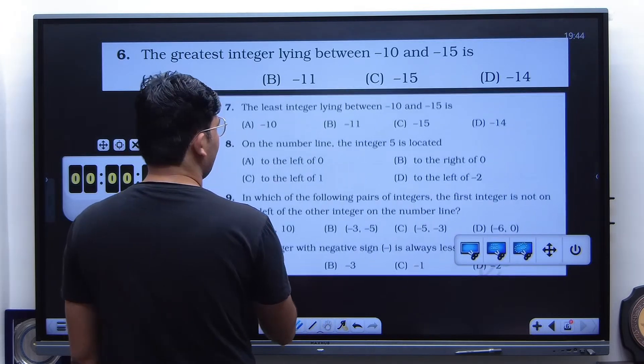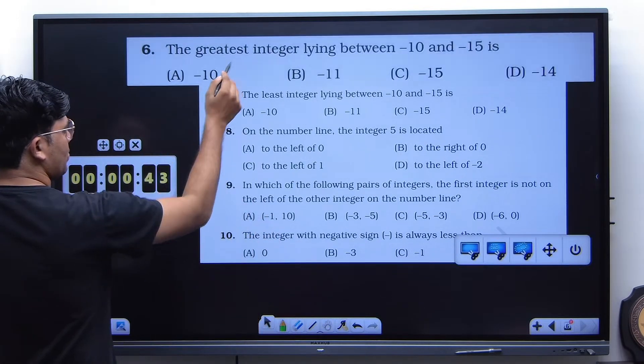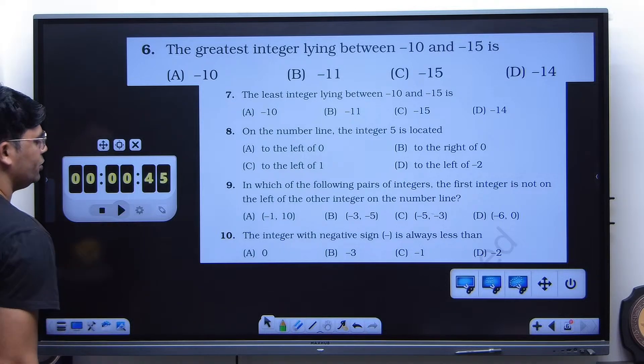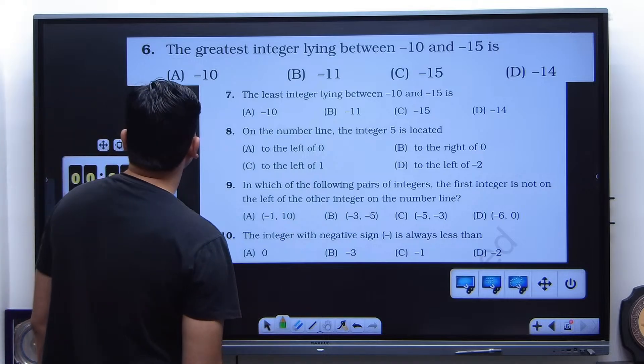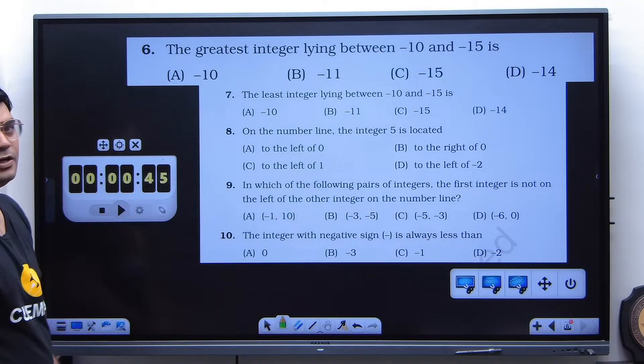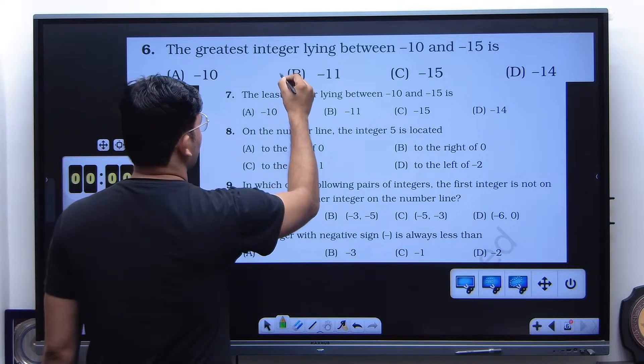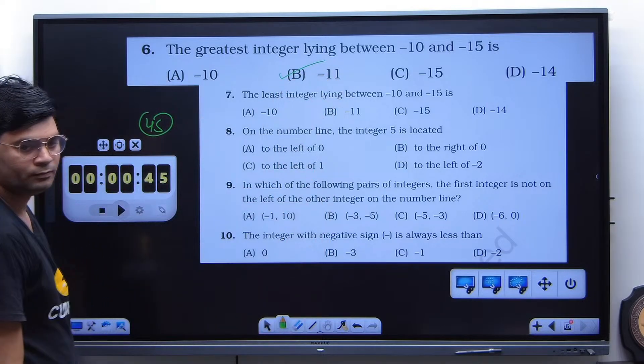All the questions are readable. Yes. Time starts now. Okay, third one. Wonderful, wonderful. So again you took 45 seconds. Tell me the answer for the first one. B. Wonderful. Second one is D.